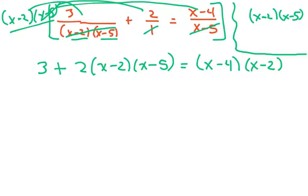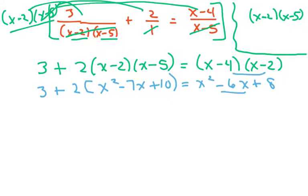Now what I'm going to do is clean all this up. So I have 3 plus 2 times, we already know what this is, x squared minus 7x plus 10 equals x squared minus 6x plus 8.